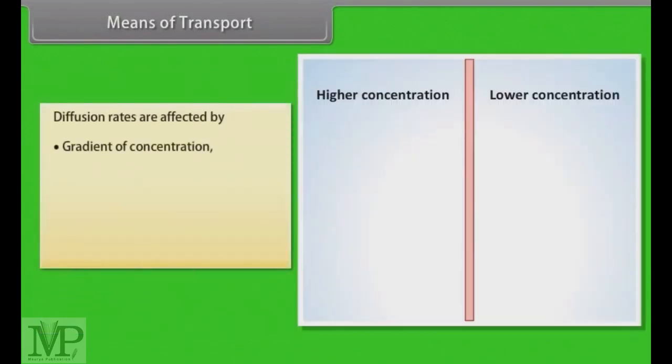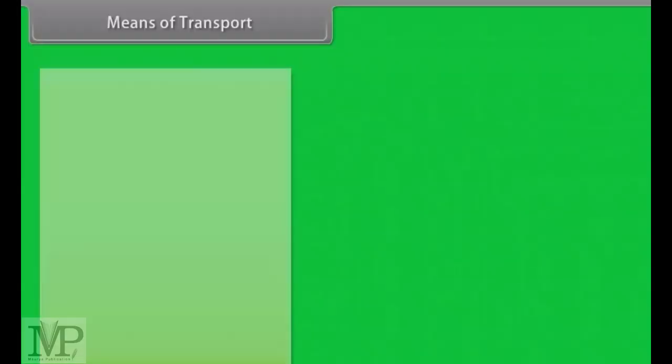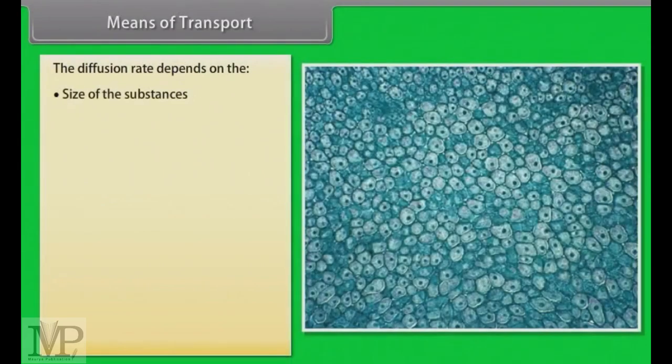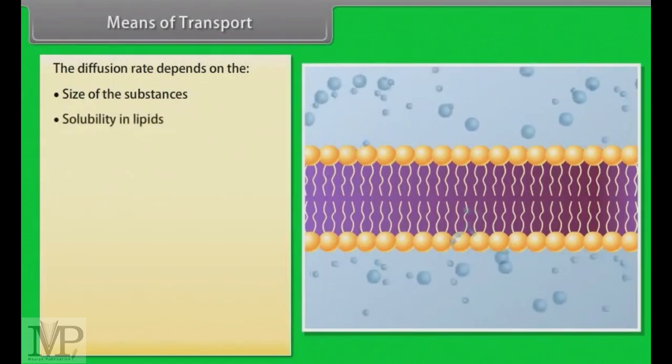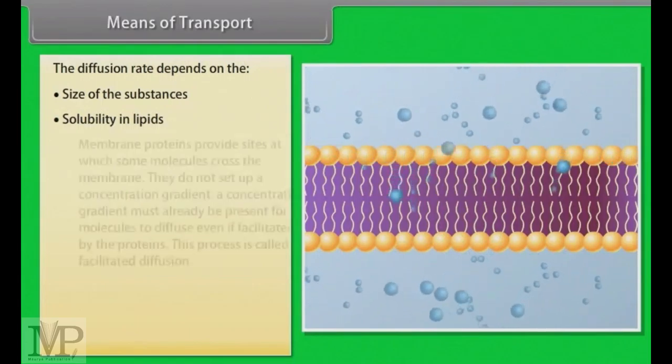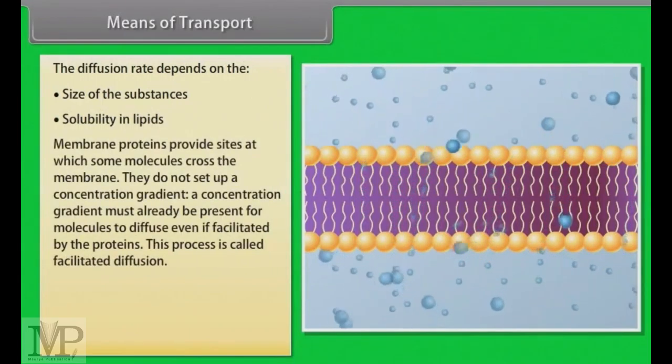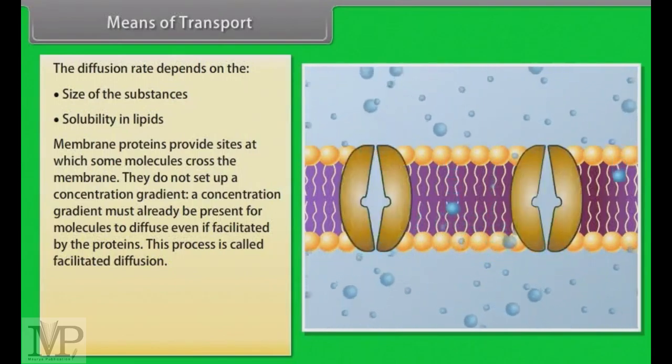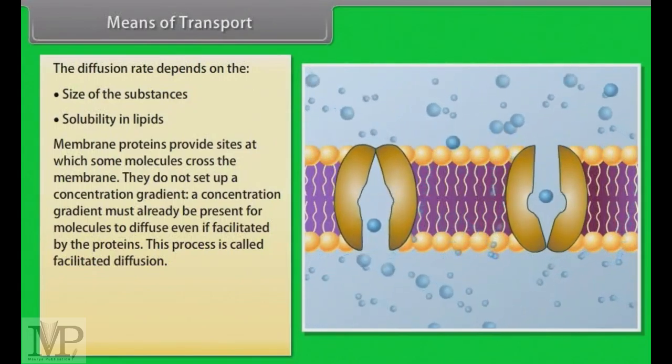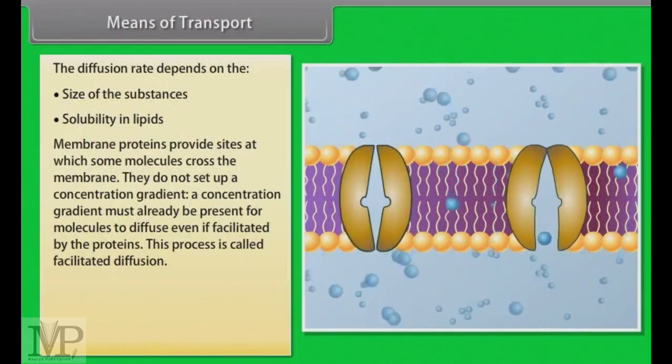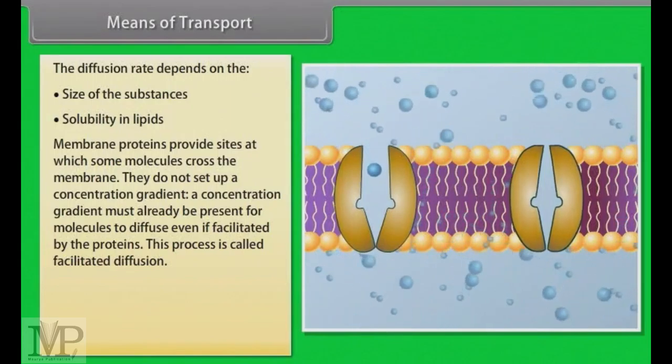Diffusion rates are affected by the gradient of concentration, the permeability of the membrane separating them, temperature and pressure. The diffusion rate depends on the size of the substances. Obviously smaller substances diffuse faster. The diffusion of any substance across a membrane also depends on its solubility in lipids, the major constituent of the membrane. Membrane proteins provide sites at which some molecules cross the membrane. They do not set up a concentration gradient. A concentration gradient must already be present for molecules to diffuse even if facilitated by the proteins.